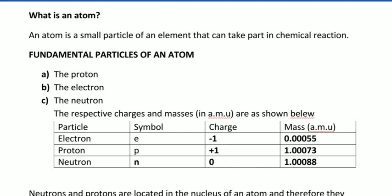The respective charges and masses are in a.m.u. We have symbols: for electron we write E, for proton P, and for neutron N. The charge in the electron is negative one, in the proton is positive one, and in the neutron is zero. Neutral suggests its name - it is neutral.